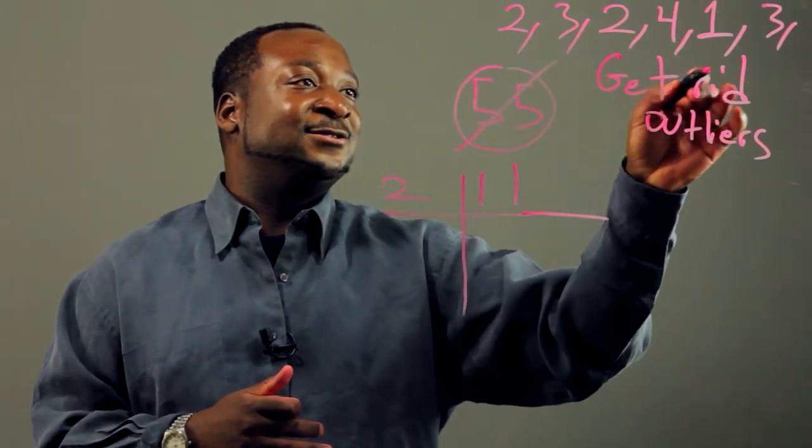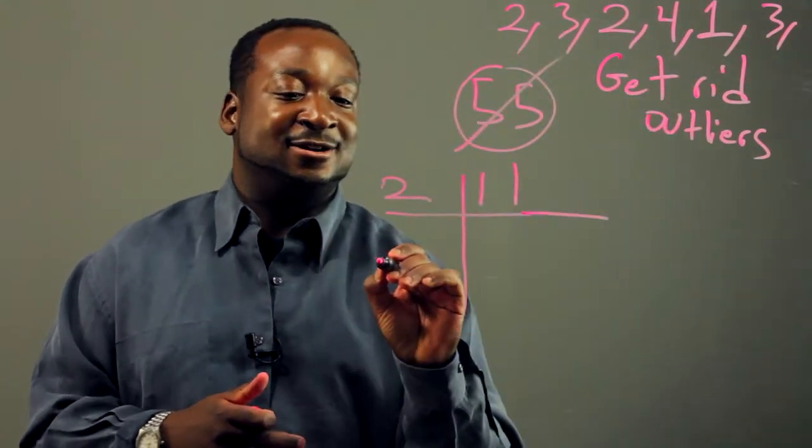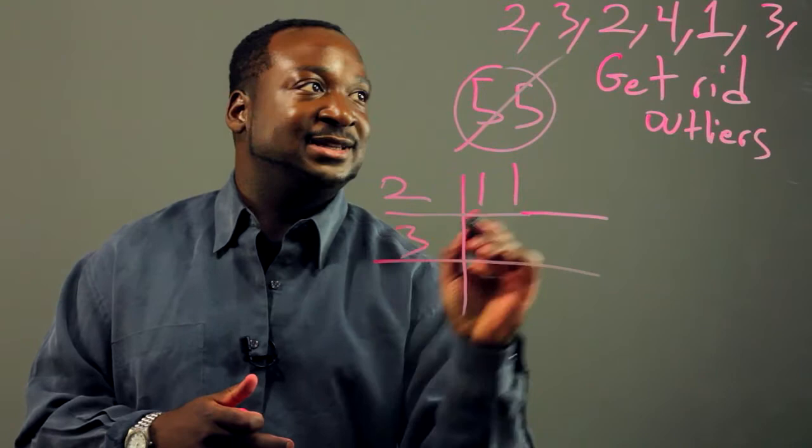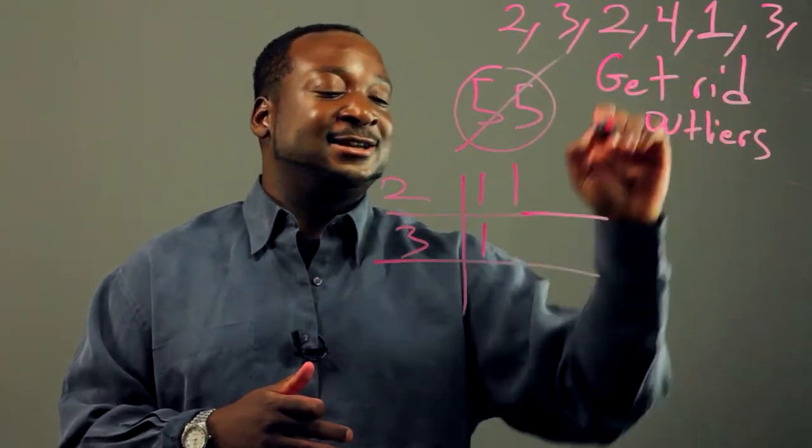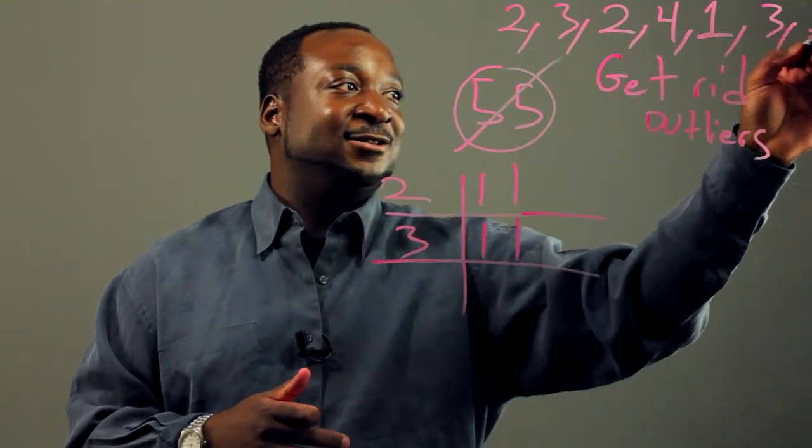So whenever you see a two, or all of the data - also three, three is going to come in often. See a three, tally, mark it. See another three, mark it, and so on and so on.